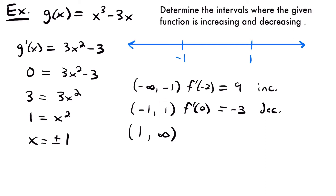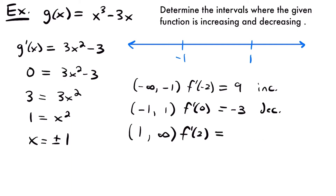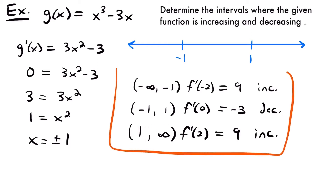Finally, for the interval from 1 to infinity, I'll choose x equals 2. That gives 3 times 2 squared minus 3, which is 3 times 4 minus 3, which is 12 minus 3, which is 9. That's a positive slope, so the function is increasing on this interval. We found our three intervals and determined whether the function was increasing or decreasing on each of them.